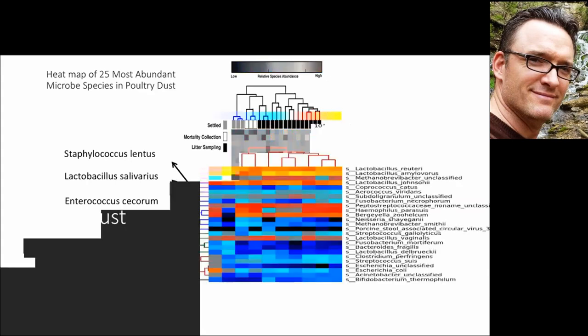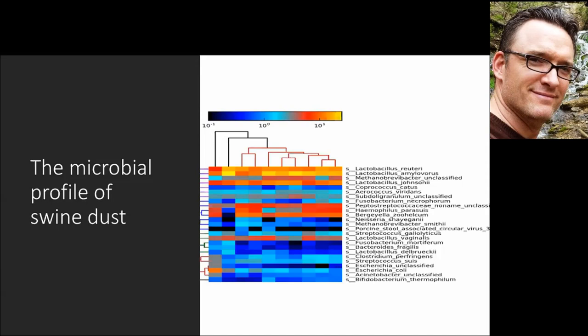In swine farrowing production — where there are mothers and baby pigs — we did a similar approach, collecting area samples of inhalable dust and characterizing the organisms. Lactobacillus again emerged as the most abundant organism. But we also found some potential opportunistic human pathogens and some pig pathogens in these samples, giving us an indication that disease can potentially be transmitted through dust between animals and also to humans.